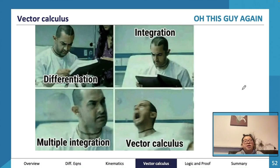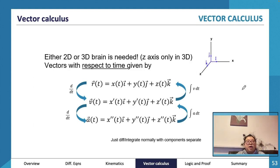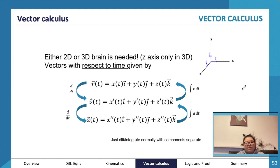This is vector calculus, which is an extension of kinematics into the universe of vectors. It's not much more complicated than regular vectors - the only thing we're adding is that instead of having numbers for each position component, we now have equations instead, which means we can do a lot more with them. We're talking about motion in multiple planes.